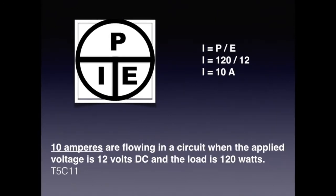For question T5C11, we are solving for I. We are given the values of 12 volts and 120 watts. By placing your finger over the I, we see that we need to divide P by E to get the answer. So we plug in our values and divide 120 by 12 and get 10. Since we are solving for current, it is expressed in amperes, so the answer is 10 amps. For the exam, know that 10 amperes is flowing in a circuit when the applied voltage is 12 volts DC and the load is 120 watts.